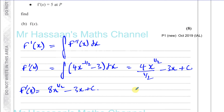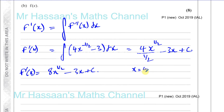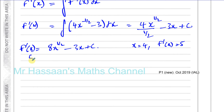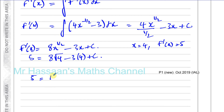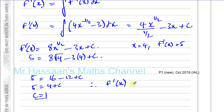We know f dash of x equals 5 when x equals 4, so we can use that to find c. Substituting: 5 equals 8 times root of 4 minus 3 times 4 plus c. Root of 4 is 2, so 8 times 2 is 16, minus 12 plus c. So 5 equals 4 plus c, giving c equals 1. Therefore f dash of x equals 8x to the power of a half minus 3x plus 1.